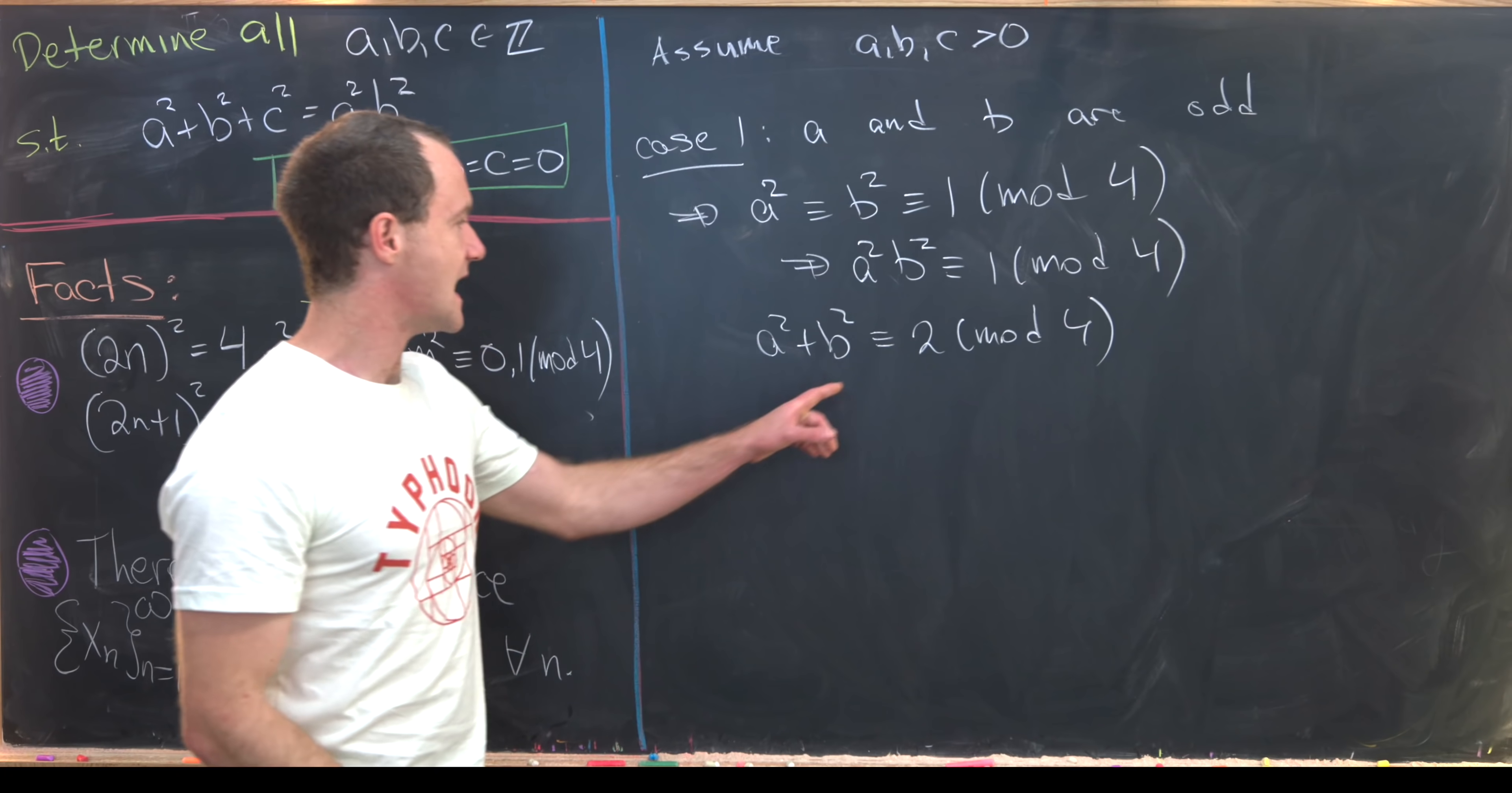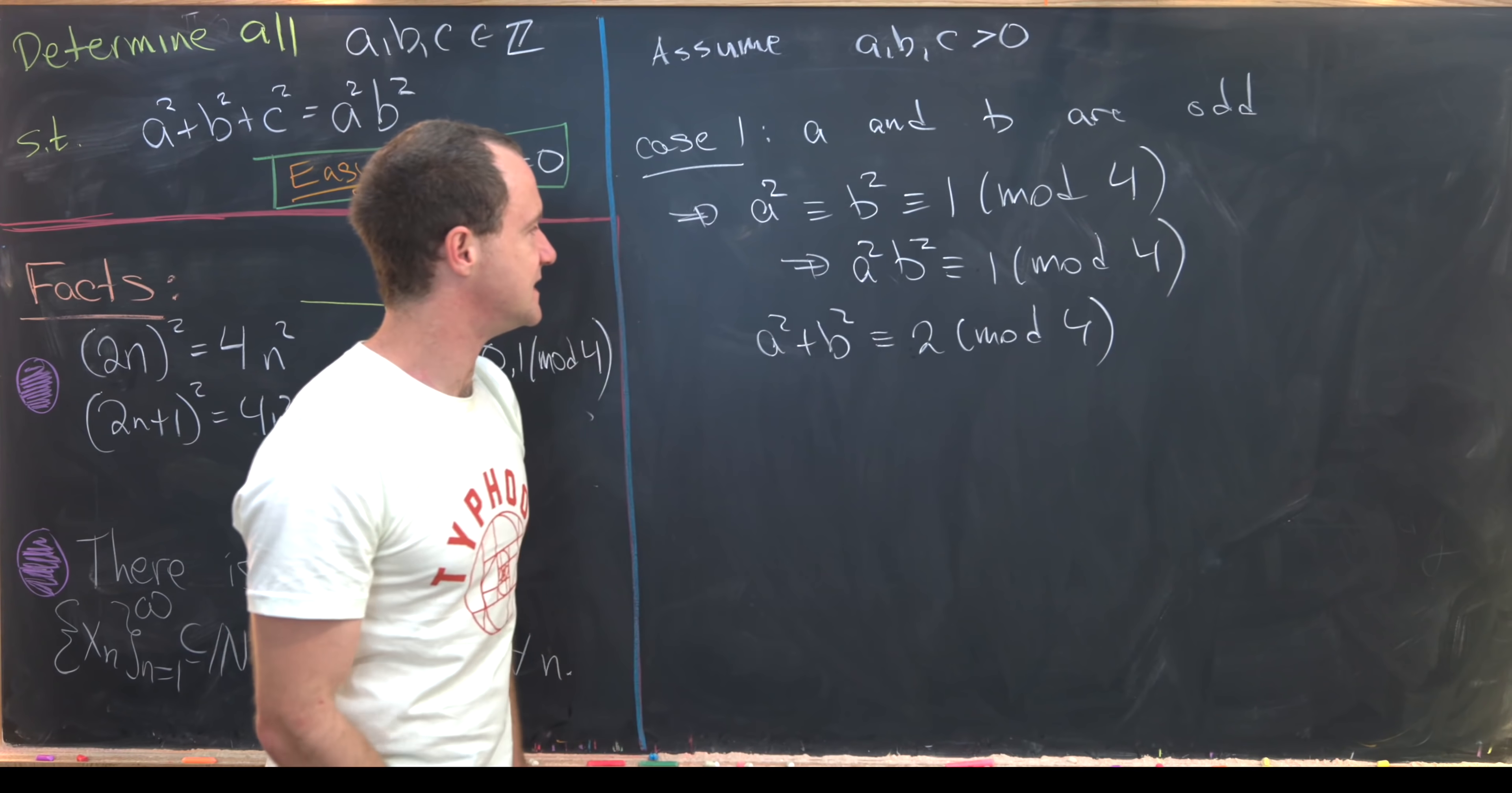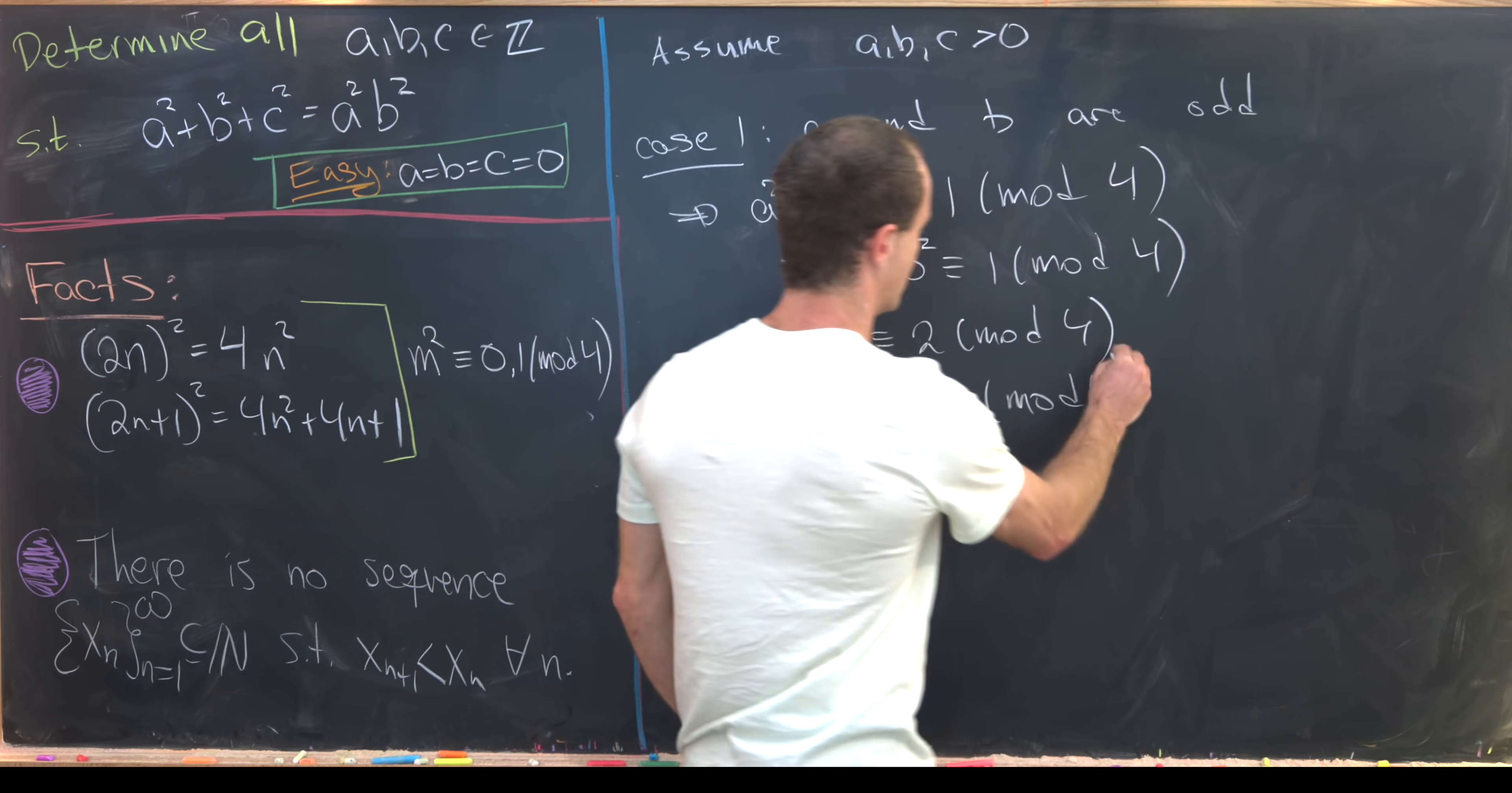But now these are supposed to be the same mod 4. But the only way for these two to be the same mod 4 is for this c² to be congruent to 3 mod 4.